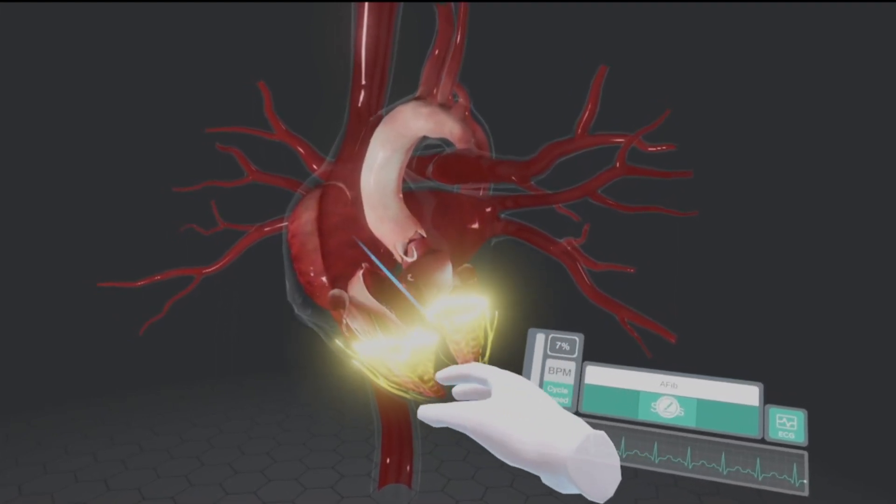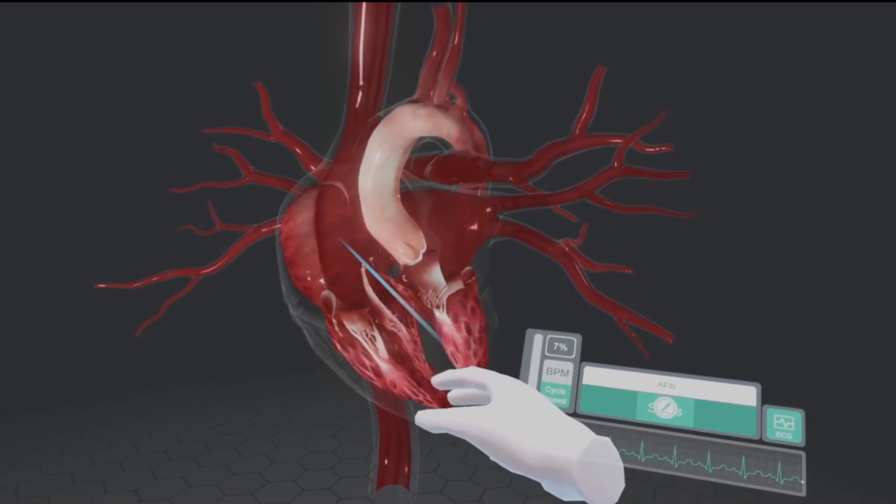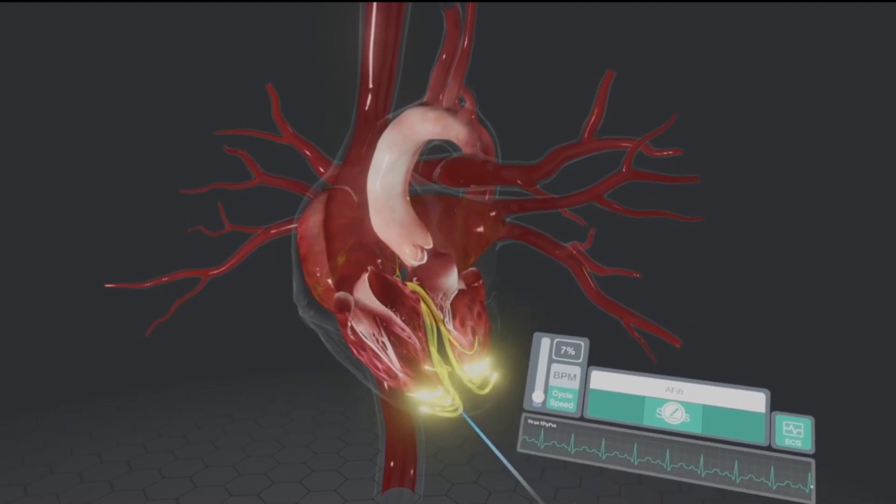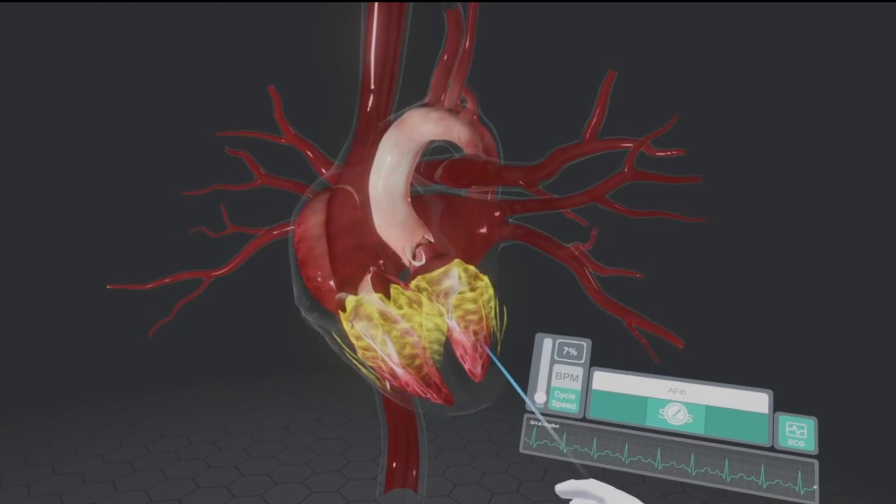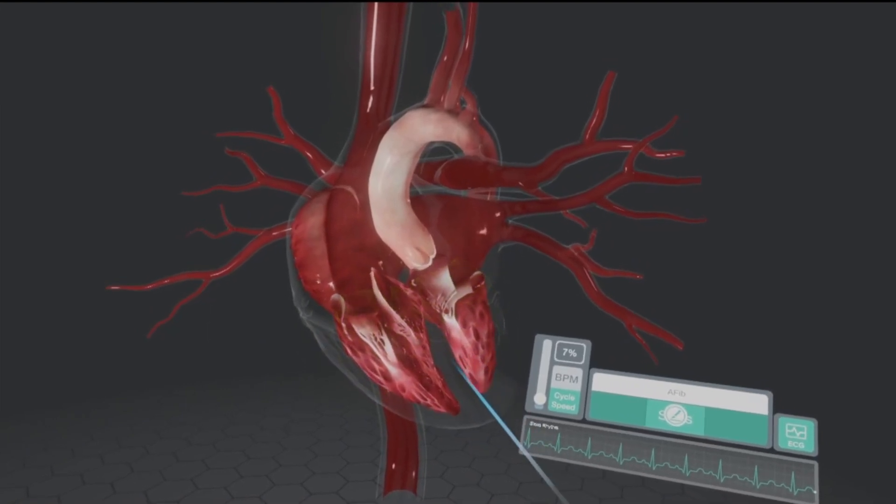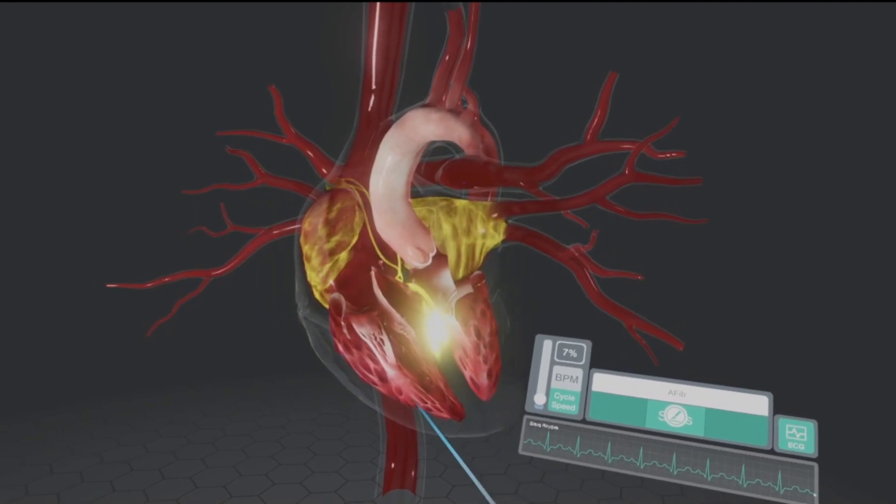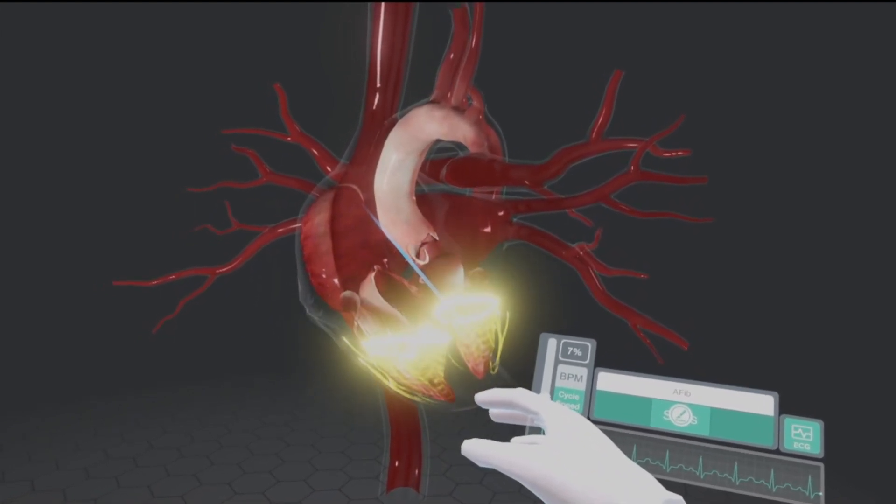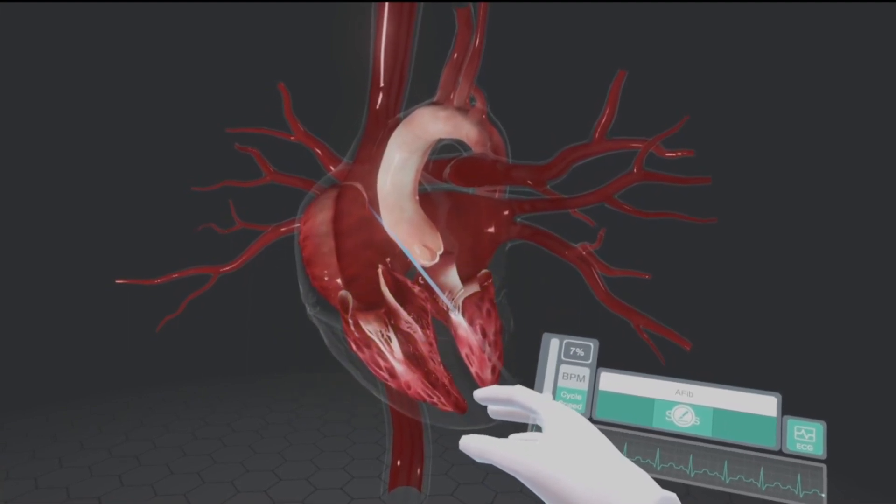Those two atria are contracting just prior to ventricular activity, depolarization, contracting, which tops off these ventricles and gives us that cardiac output or that stroke volume.